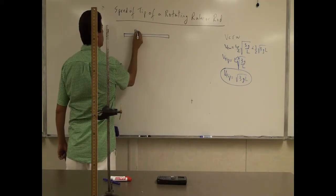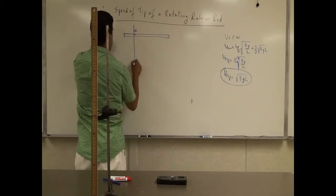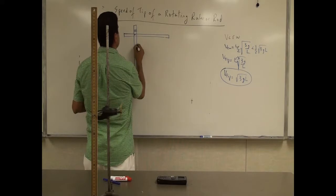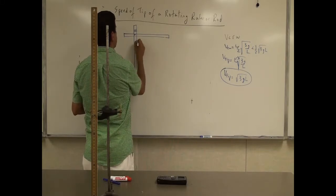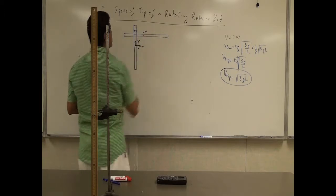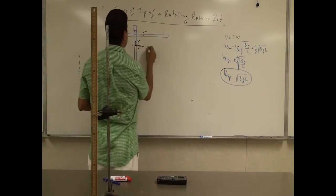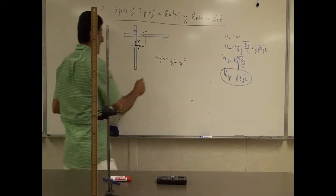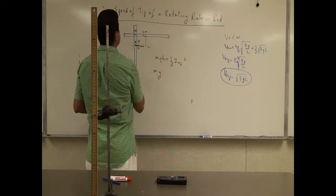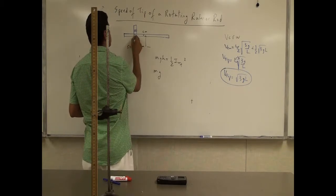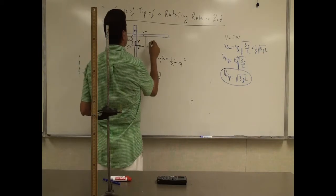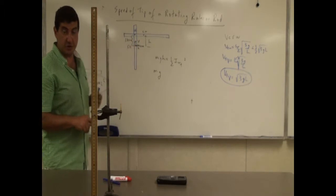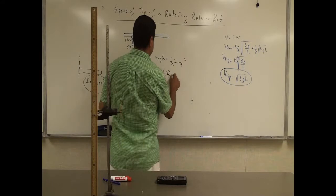The pivot is at the 66 centimeter mark. We find the center of mass, which is at the 50 centimeter mark — that's our reference point. We place the xy axis at the center of mass. The height H is the distance from the center of mass to the pivot: 66 minus 50 equals 16 centimeters. So H = 0.16 meters.